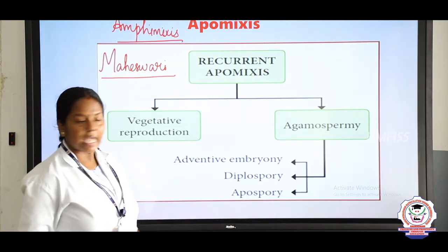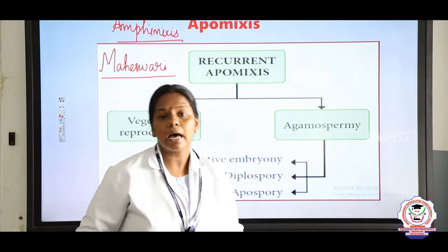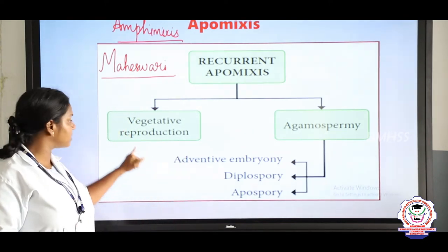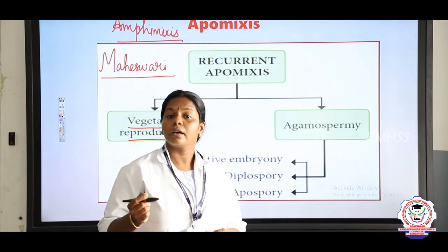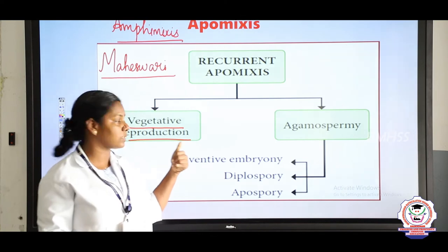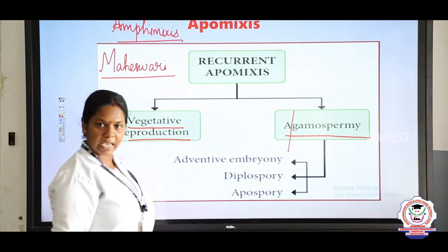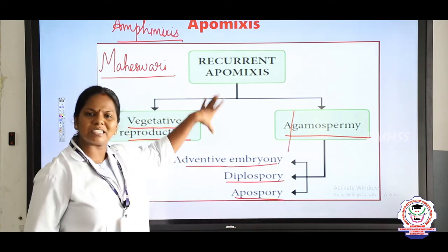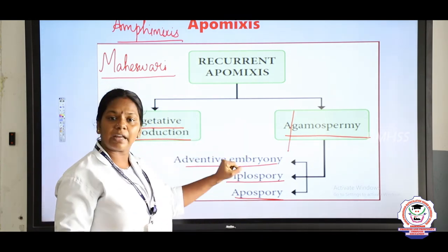Maheshwari classified apomixis into two types: non-recurrent and recurrent apomixis. In non-recurrent apomixis the haploid embryo sac becomes the embryo. Recurrent apomixis is of two types: vegetative reproduction — such as bulb of onion, runner of Mentha (pudina), and Chrysanthemum — and agamospermy. Agamospermy does not involve fusion of gametes and is of three types: adventive embryony, diplospory, and apospory.